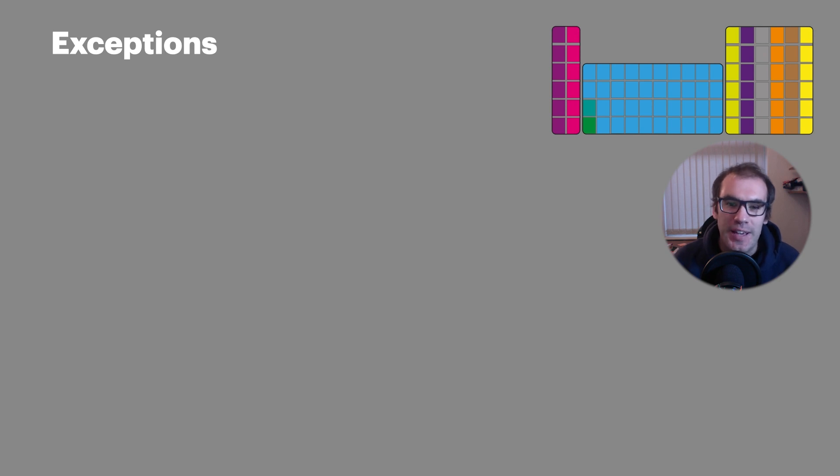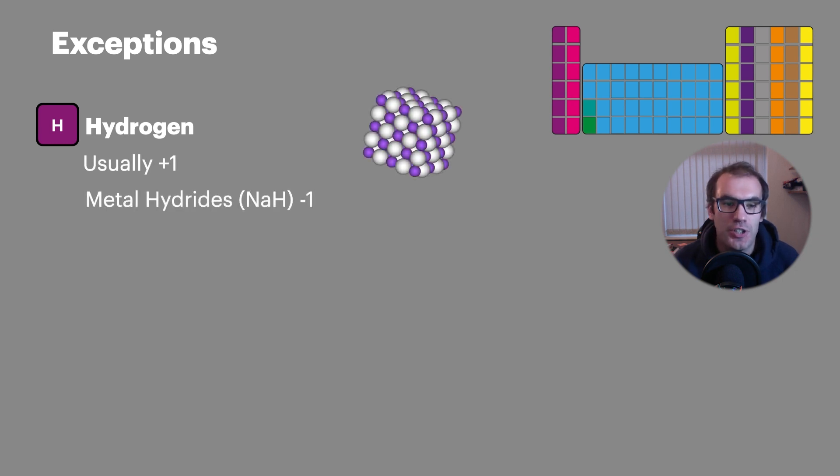Now with all good rules in chemistry, there are a few exceptions. Hydrogen, which is usually plus one, will become minus one in a metal hydride such as sodium hydride.